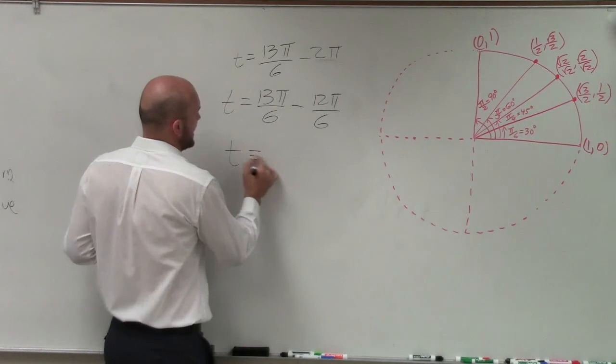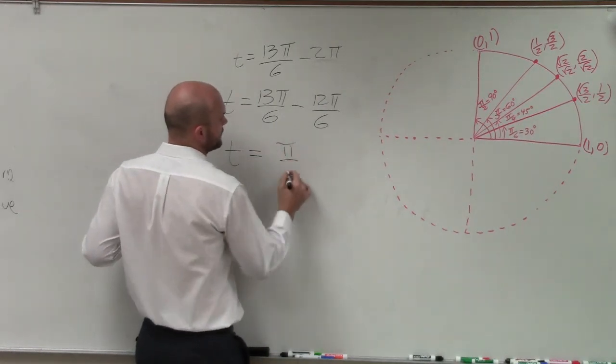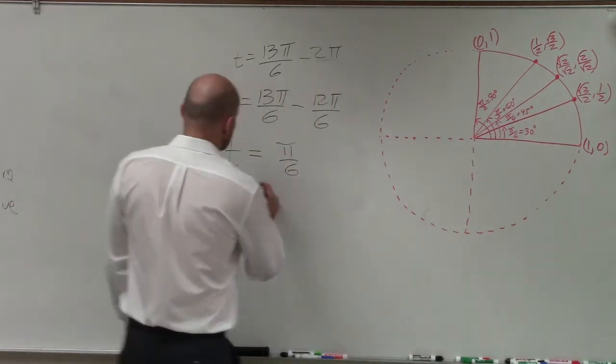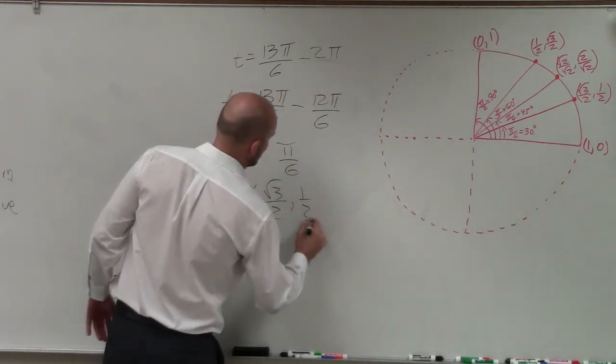So now when I subtract these, I see my angle is t equals pi over 6. Where you guys can see, well, pi over 6, that point is very simple. Square root of 3 over 2, comma, 1 half.